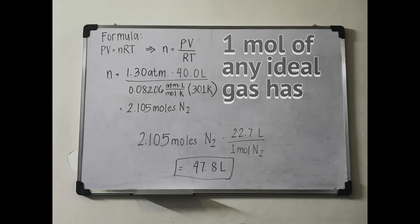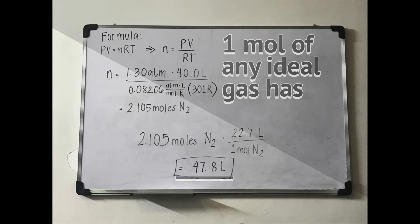In your case, 2.105 moles of nitrogen gas will occupy 47.8 liters.